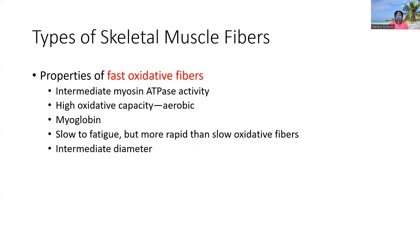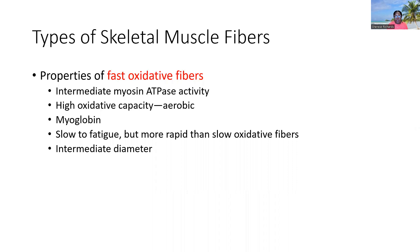In the middle are fast oxidative fibers — an intermediate of both types described. They have an intermediate rate of contraction and high oxidative capacity, which means more myoglobin and more mitochondria, though not as much as slow oxidative fibers. They fatigue more slowly than fast glycolytic but more rapidly than slow oxidative fibers. Their diameter is also intermediate — not as big as fast glycolytic and not as small as slow oxidative.